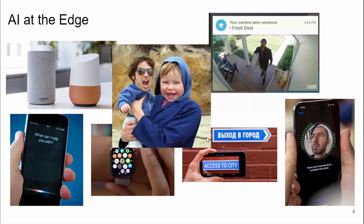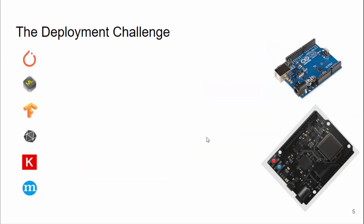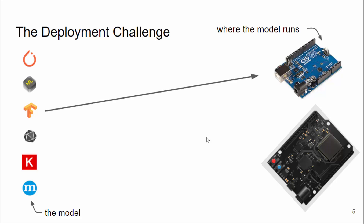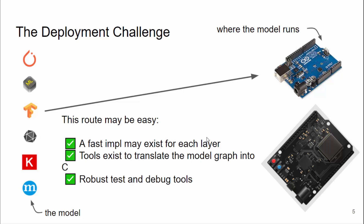Now all of these TinyML deployments have something in common, and we call that here at OctoML the deployment challenge. If you line up all of the model definition frameworks on the left and then place the places where you might want to run the model on the right, you'll notice that not every path is easy to traverse. This one right here may be quite easy.